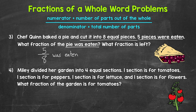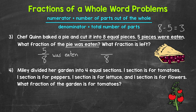Now let's go to our second question: what fraction is left? There were eight total pieces and five were eaten, so eight minus five gives us three pieces left. The denominator is eight again — eight total pieces. And the numerator is three, since there are three pieces left. Three pieces out of the eight total pieces are left. So our fraction is three eighths. Three eighths of the pie is left. So five eighths of the pie was eaten and three eighths of the pie is left.